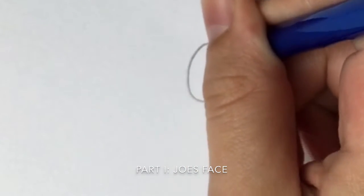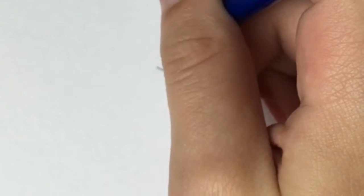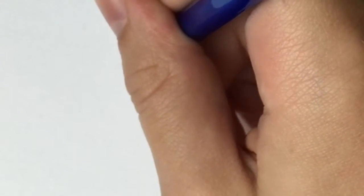First you're going to want to start off with a simple zero. From then on you'll add a slightly curved line. Then add a zero that is partially covered by both the line and the first zero. This is making Joe's eyes.